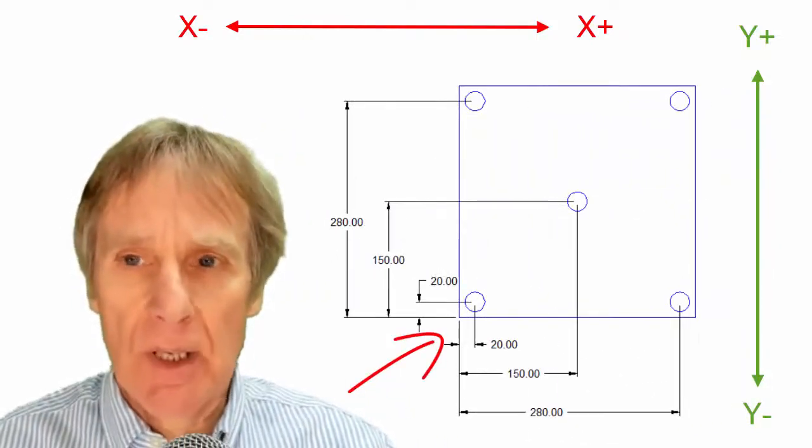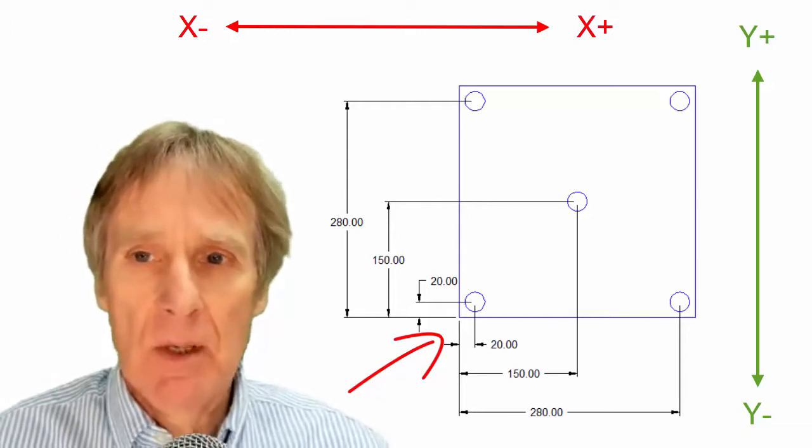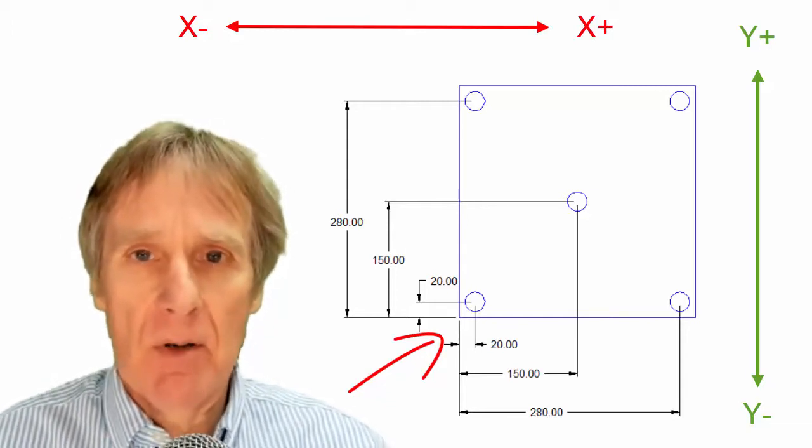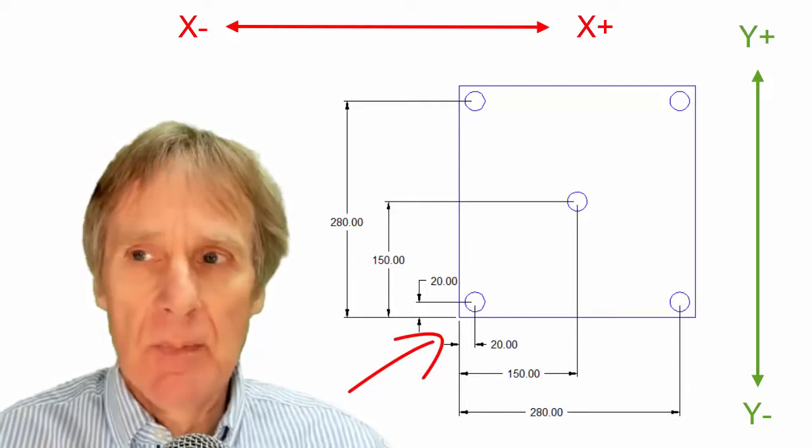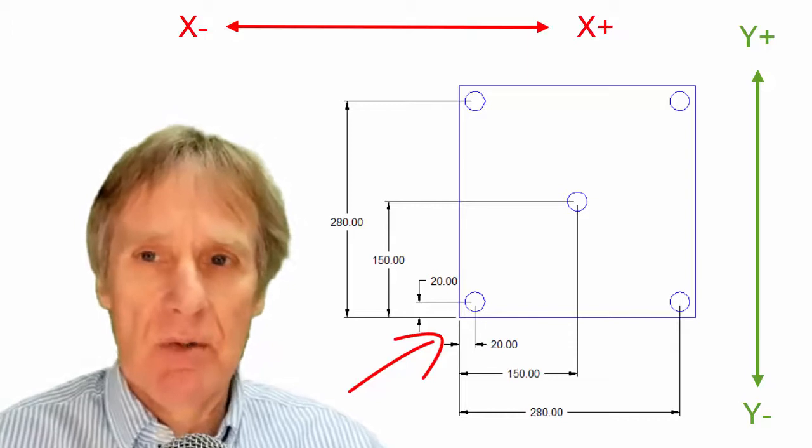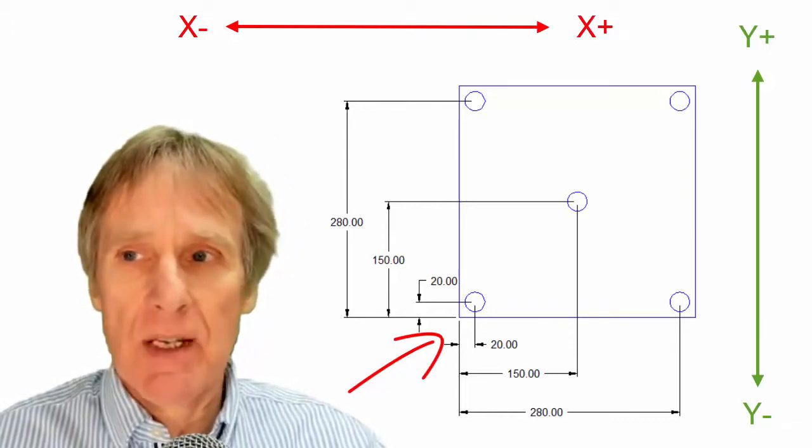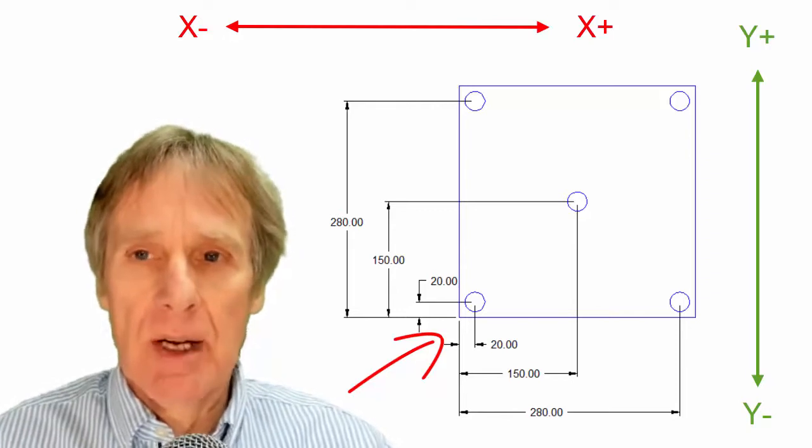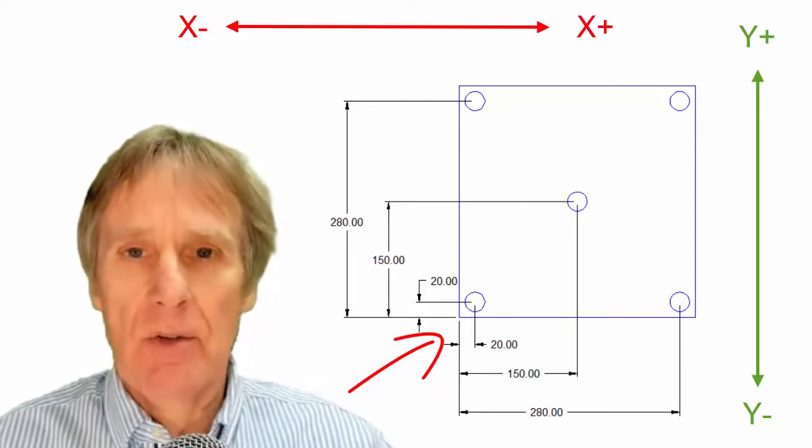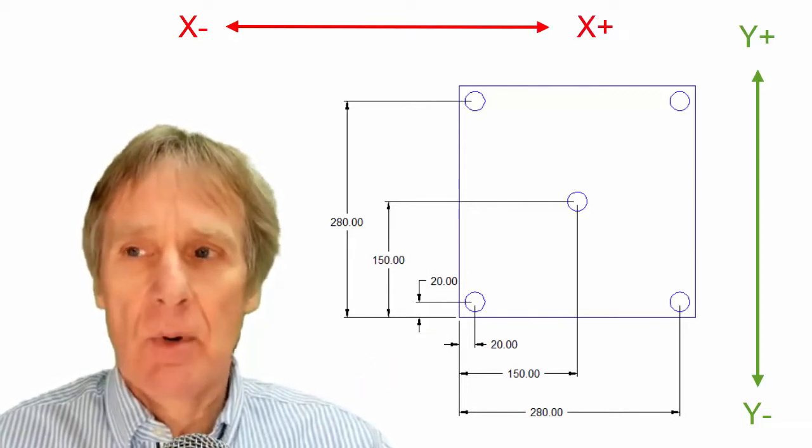So everything's coming from that bottom left-hand corner, which means you can see the X plus and the X minus signs on the drawing. It's always a good idea to put these on if you're doing any programming—just pencil these on or draw them on whatever, so that you can quickly see your directions. Now if you look on this one, you can see that all the X figures and all the Y figures would be plus because it's coming from that bottom left-hand corner.